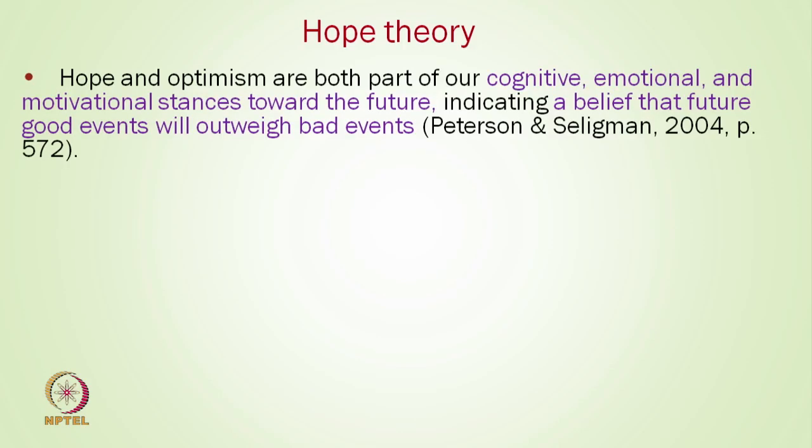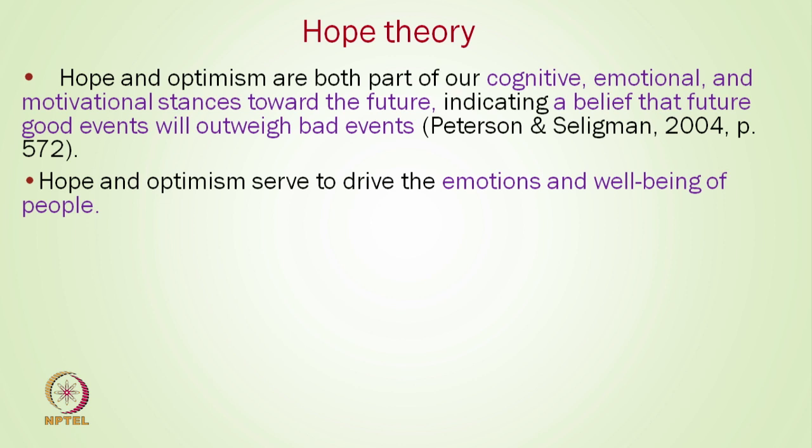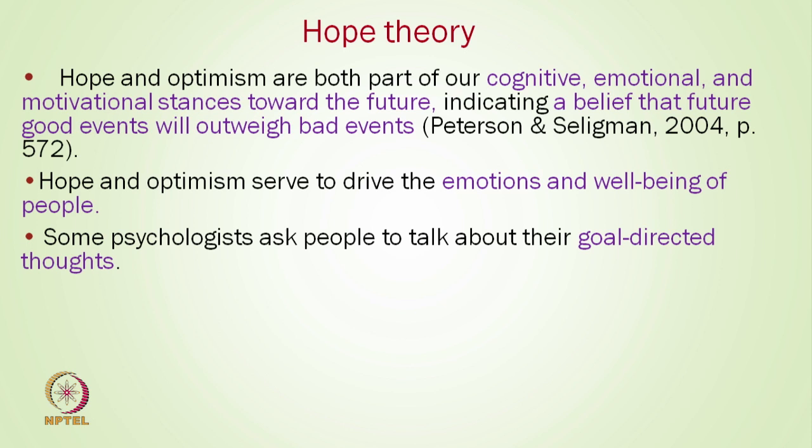Hope and optimism are both part of our cognitive, emotional, and motivational stances towards the future, indicating a belief that good events will outweigh bad events. Both are related to future directions involving cognitive, emotional, and motivational factors. If we think good events will happen, we are hopeful and optimistic. If our focus is on bad events, we may have a lower level of hope and optimism. Hope and optimism serve to drive the emotions and well-being of people, making them important constructs in positive psychology.